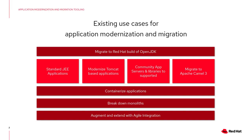Migration Toolkit for Applications is here to help you with your migrations. From making your applications more JEE standard, so they are not using specific tokens of code, to modernizing your Tomcat-based applications, to bringing those applications from your community platforms to supported platforms, or if you heard about Camel 3 and you want to get the best of it and you have Camel 2 code, we can help you to move from Camel 2 to Camel 3.